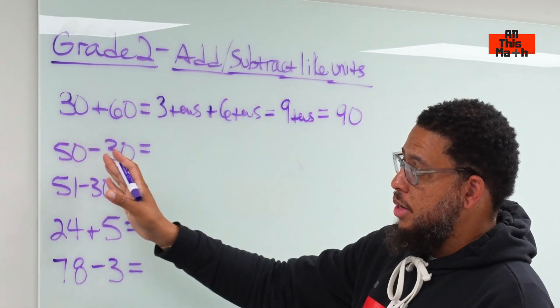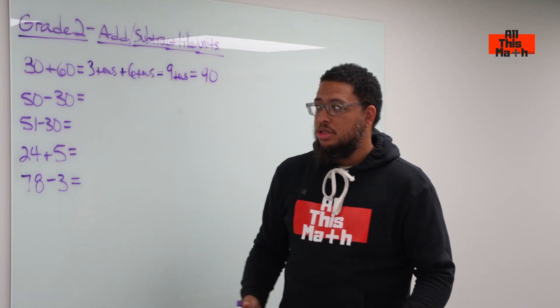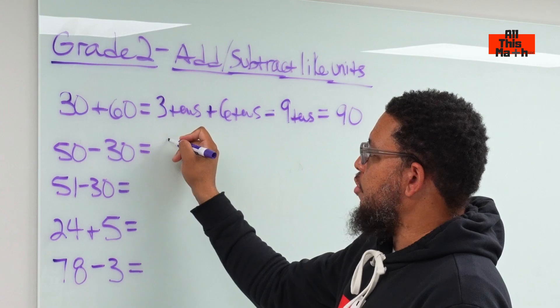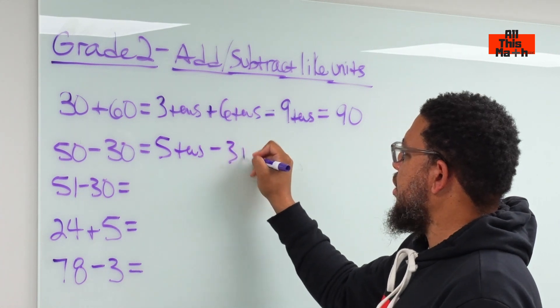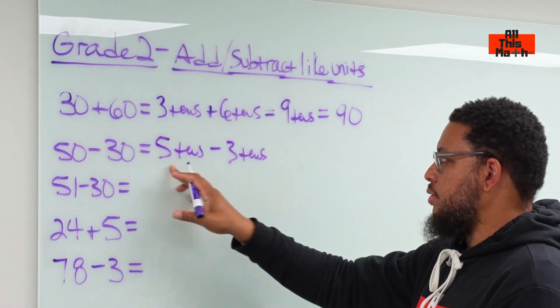Then we go to the next example—except now we're doing subtraction, 50 minus 30. Let's break this down. 50 is the same thing as saying five tens minus three tens, just like money: five $10 bills, three $10 bills.